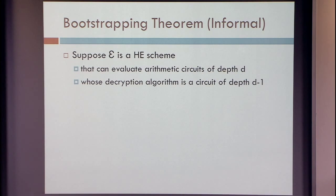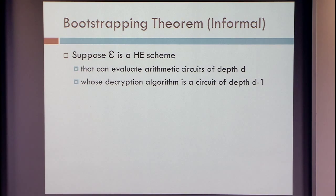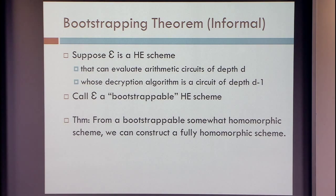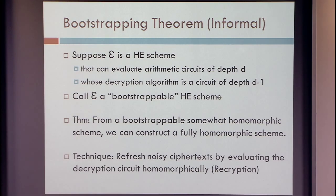This brings us to Craig's bootstrapping theorem, which I'll give informally. Suppose we have a homomorphic encryption scheme that can evaluate arithmetic circuits up to some depth d, but where decryption of every ciphertext that can result from this computation takes at most depth d minus 1. In that case we call this a bootstrappable somewhat homomorphic encryption scheme. The theorem says that from a bootstrappable somewhat homomorphic encryption, you can construct a fully homomorphic scheme using bootstrapping, if you add the assumption of circular security.